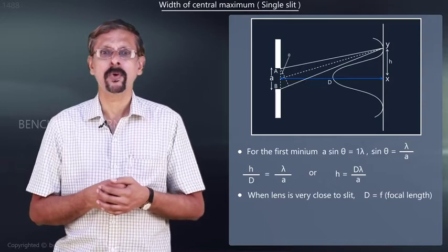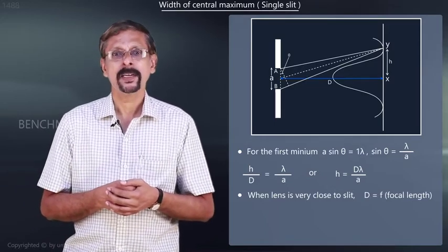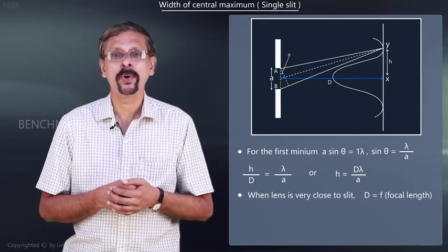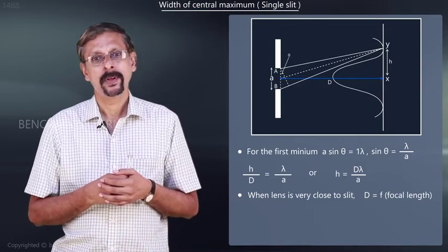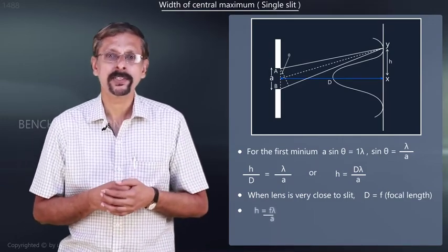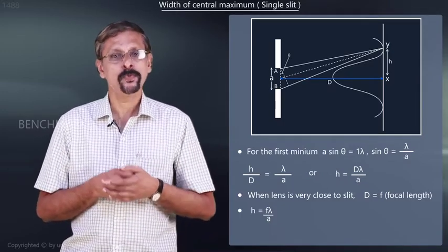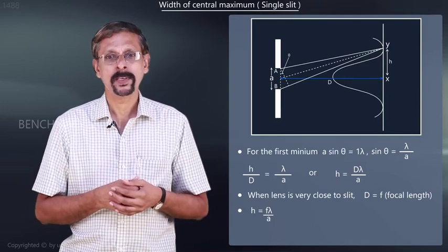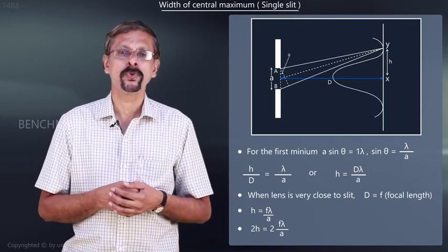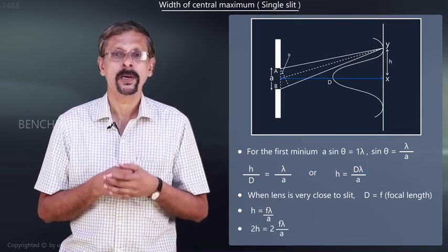When the lens is kept very close to the slit so that capital D is equal to the focal length of the lens, and hence, we can write h is equal to f λ divided by a, or the width of the central maximum is 2h that is equal to 2f λ by a.